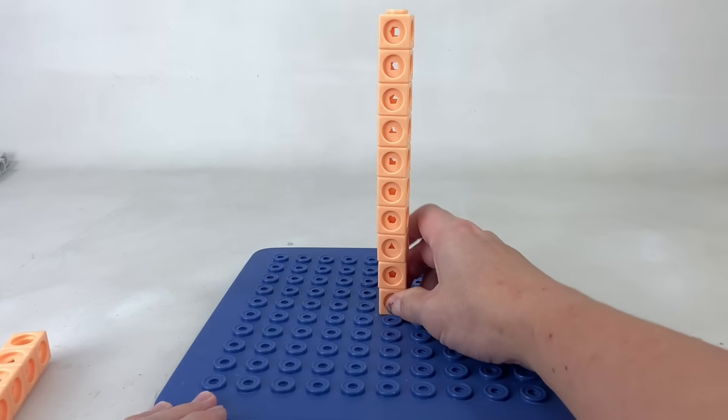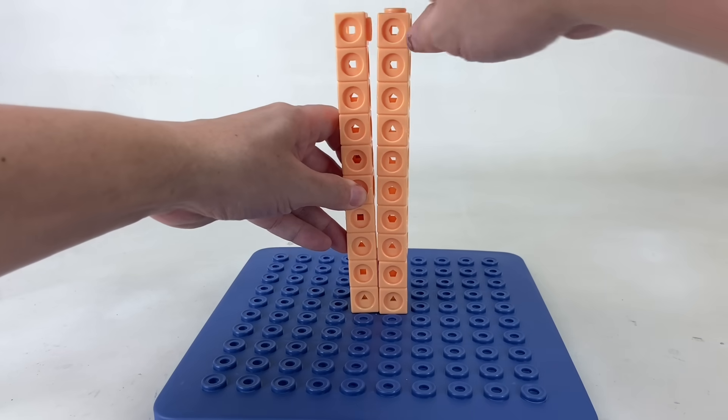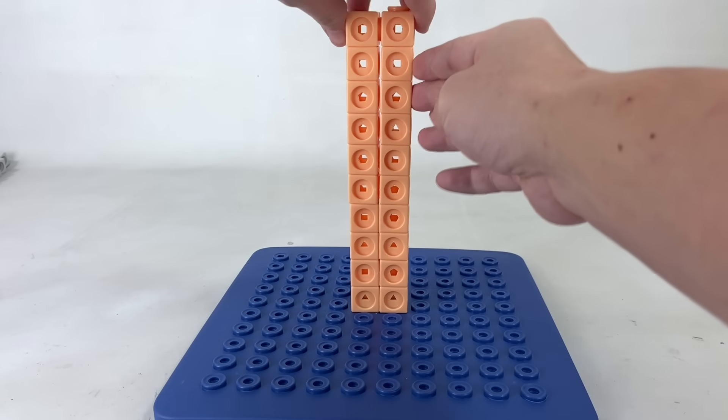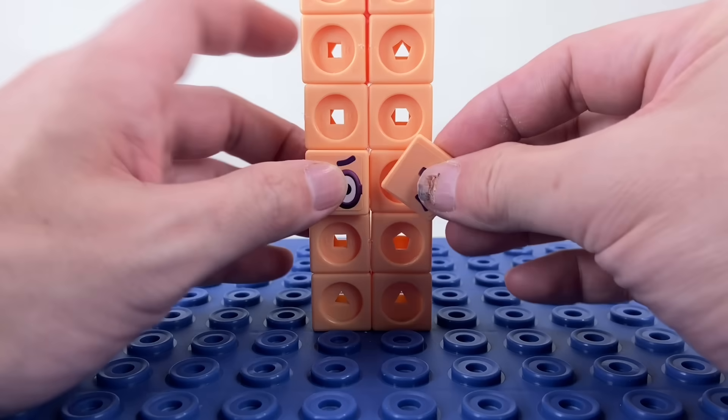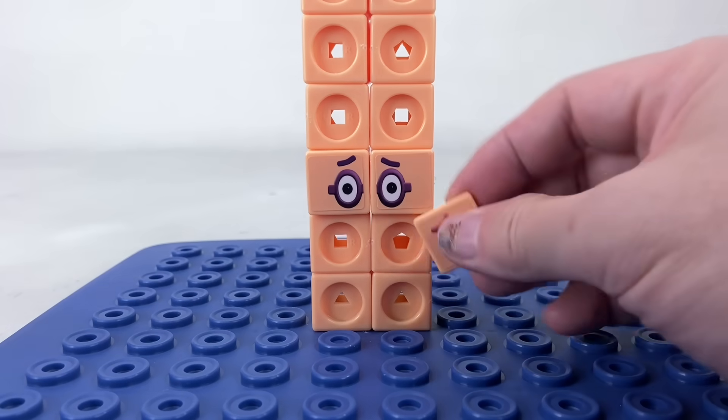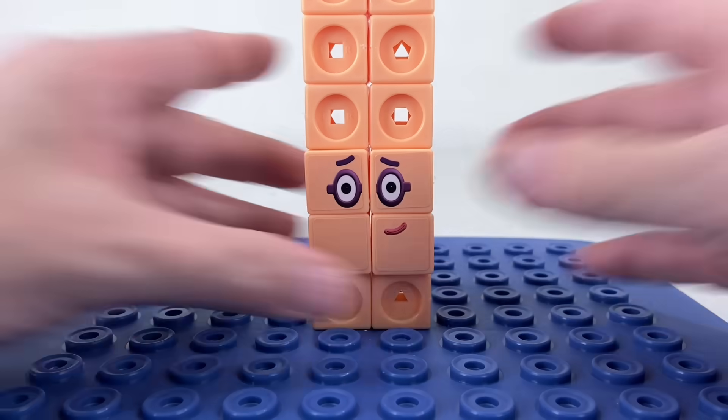Our next Number Block Hero is made up of two 10s! That's a total of 20 light orange blocks! Let's connect his eyes, mouth, and cheeks, and his signature bow tie!